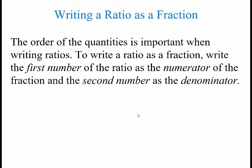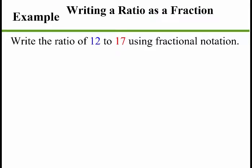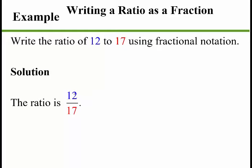The order of the quantities is important when writing ratios. To write a ratio as a fraction, write the first number as the numerator — the top of the fraction — and the second number as the denominator, the bottom of the fraction. For example, to write the ratio of 12 to 17 using fractional notation: 12 goes in the top as the numerator, and 17 goes in the bottom as the denominator. So the ratio is 12 over 17. Very simple.